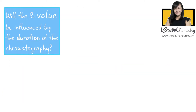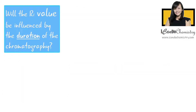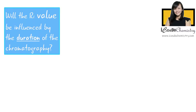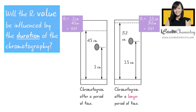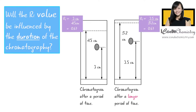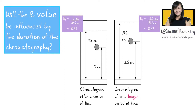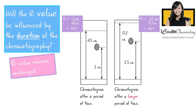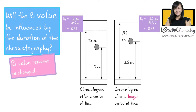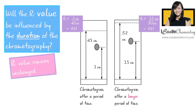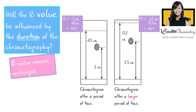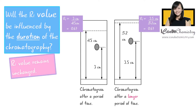Now, will the RF value be influenced by the duration of the chromatography? If we give more time for the solvent to travel up the chromatography paper, the distance traveled by the component will increase too. Hence the RF value remains the same. This holds true as long as the conditions of the chromatography are the same — that is, the same solvent is used and the temperature of the room is the same.